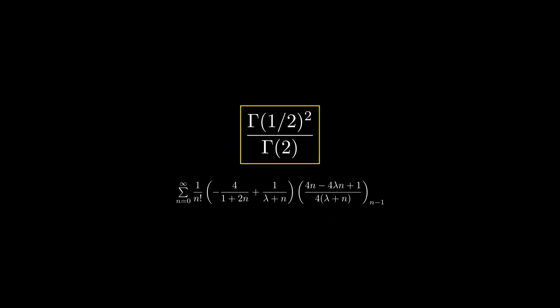Now have a look at this expression. The numerator is gamma of half squared, which means it's Pi, and gamma of 2 in the denominator is 1 factorial, which is 1. Therefore we get Pi equal to the below expression.